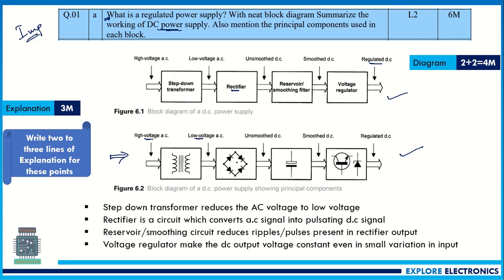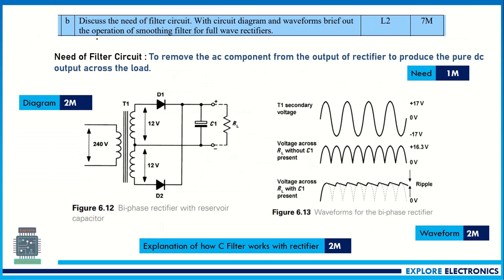The output of the rectifier will be an unsmoothed DC — a pulsating signal — so we need a filter at the output. The filtered output is called smoothed DC, which is then given to the voltage regulator. The voltage regulator eliminates small variations in the smoothed DC and provides a regulated output; here a Zener diode is used. Each block needs to be explained briefly. This carries six marks.